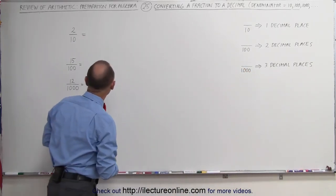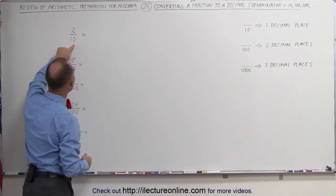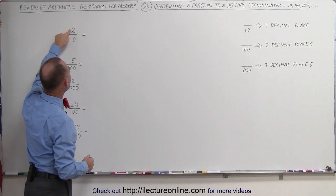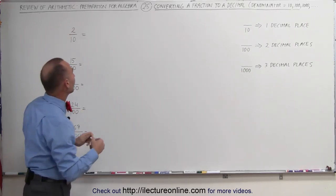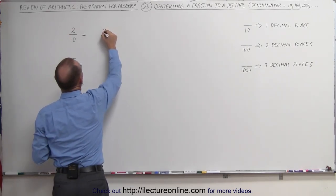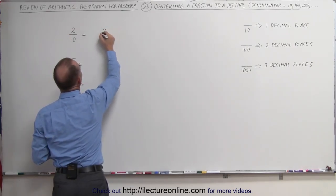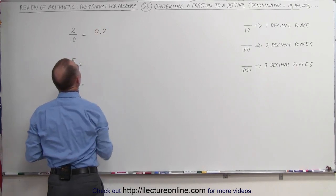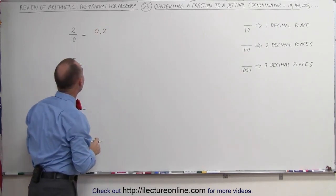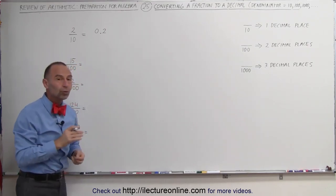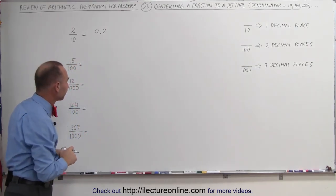Here's an example: divided by 10, so we write the number and we have one decimal place. We go one decimal place and put it right there. In this case, we simply put a zero in front of it, so 2 divided by 10 is equal to 0.2 (two tenths).